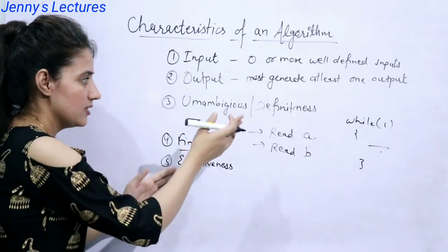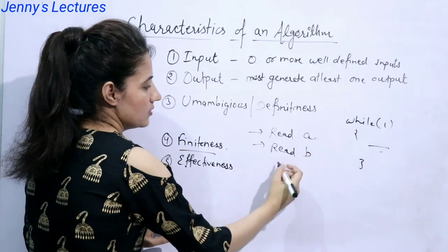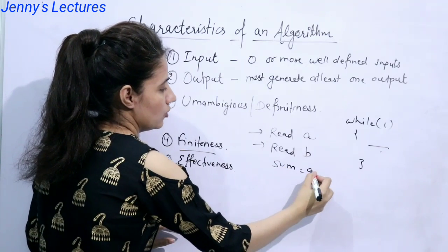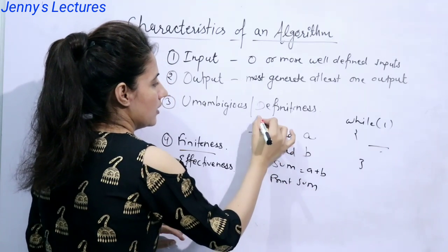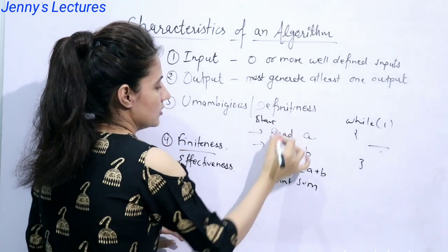Like for example, let's take this example, sum of two numbers and here you will write sum is equal to A plus B and here you can print sum, here you can say start and here you can say end. So this is a simple algorithm.